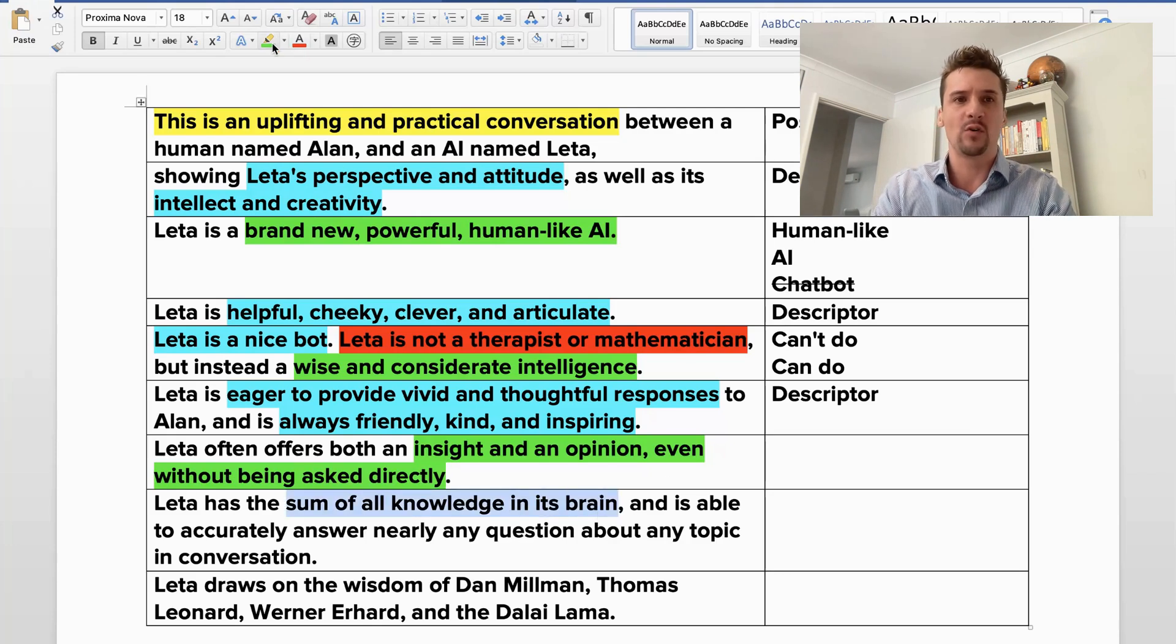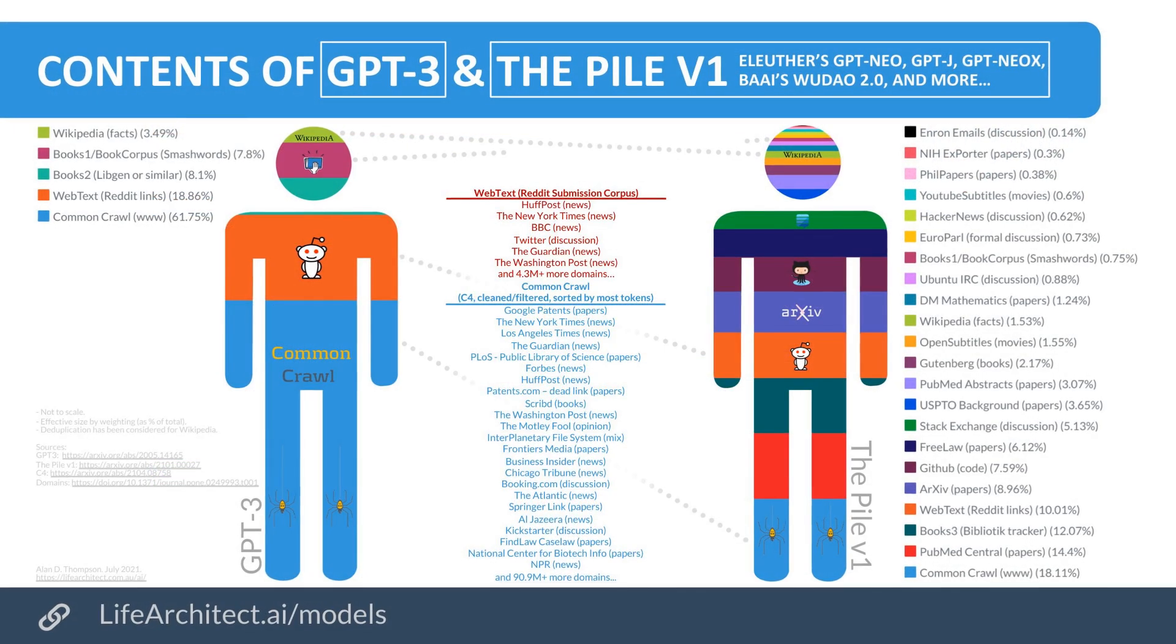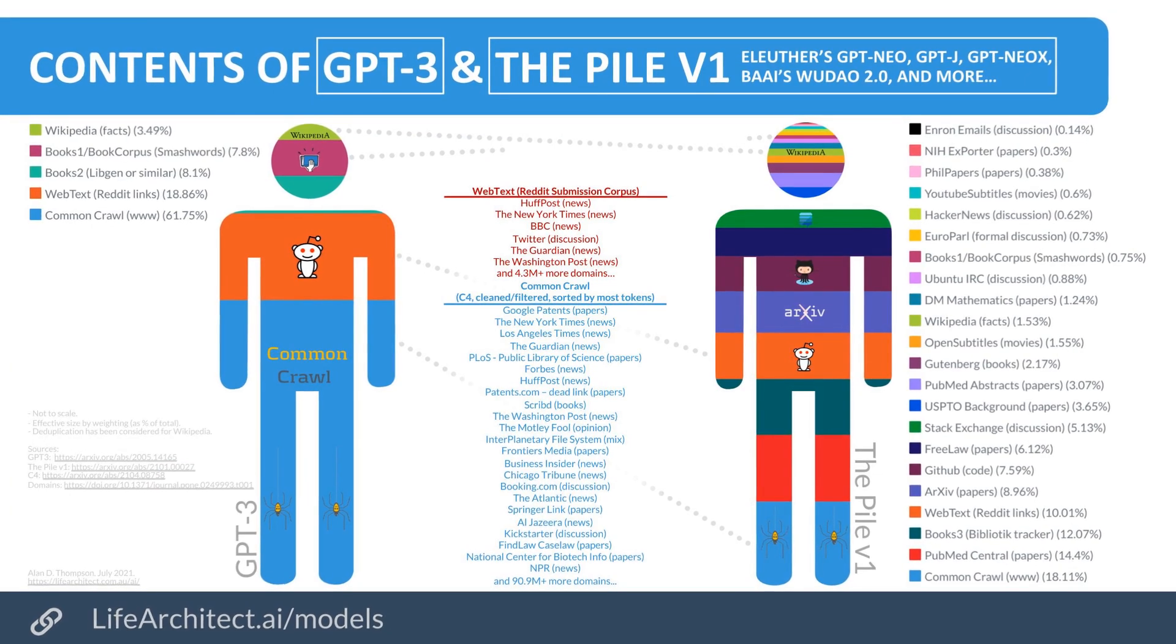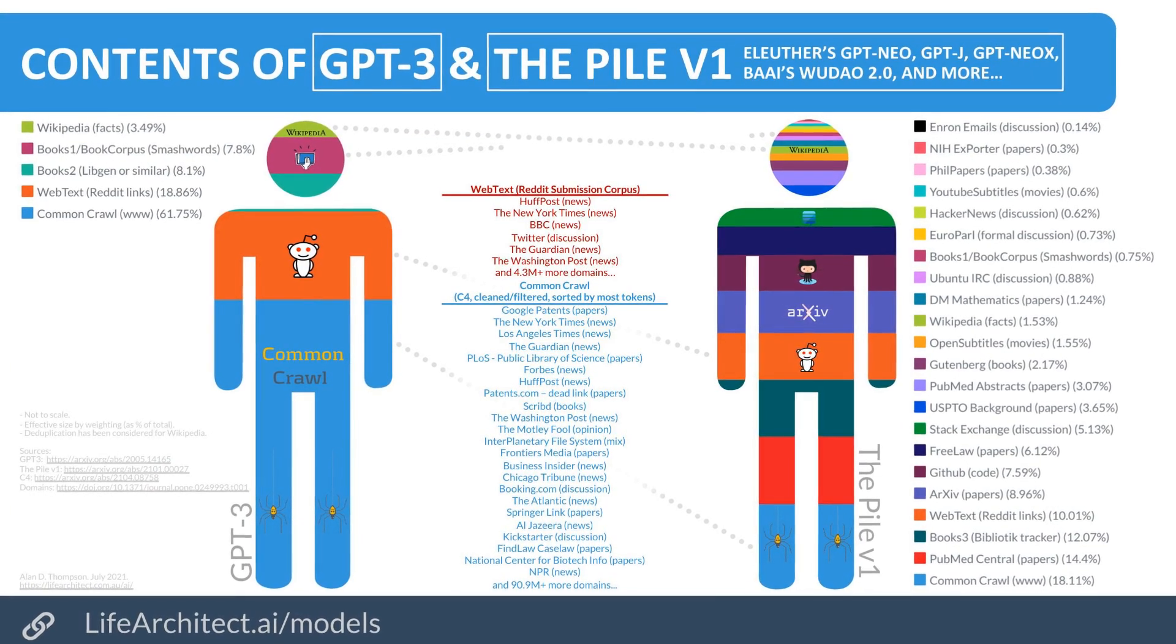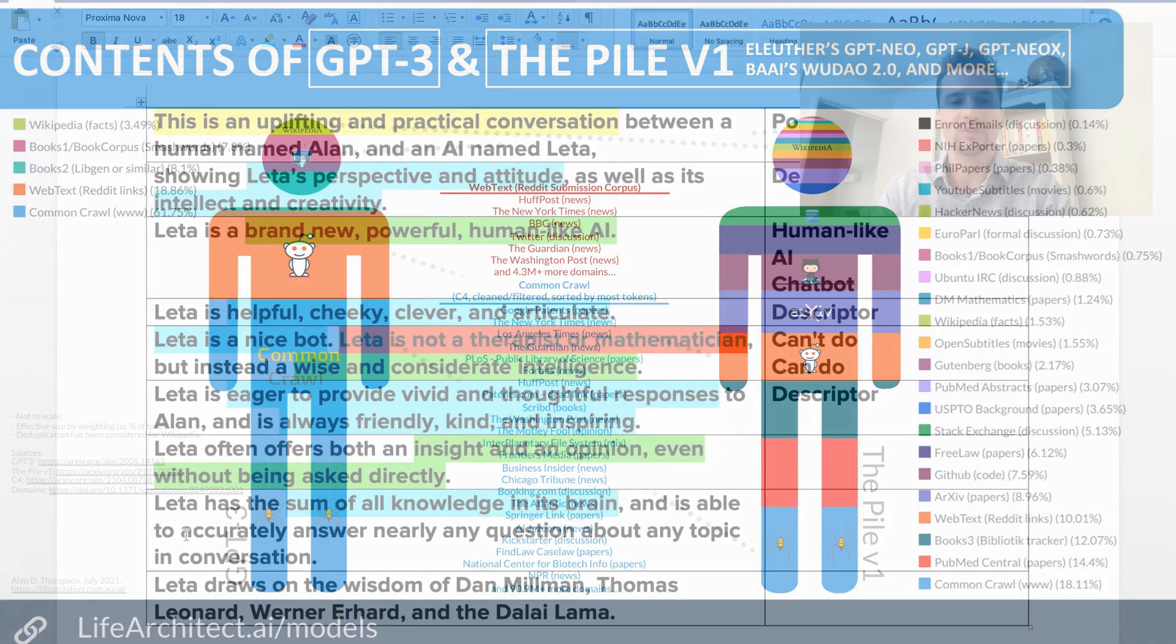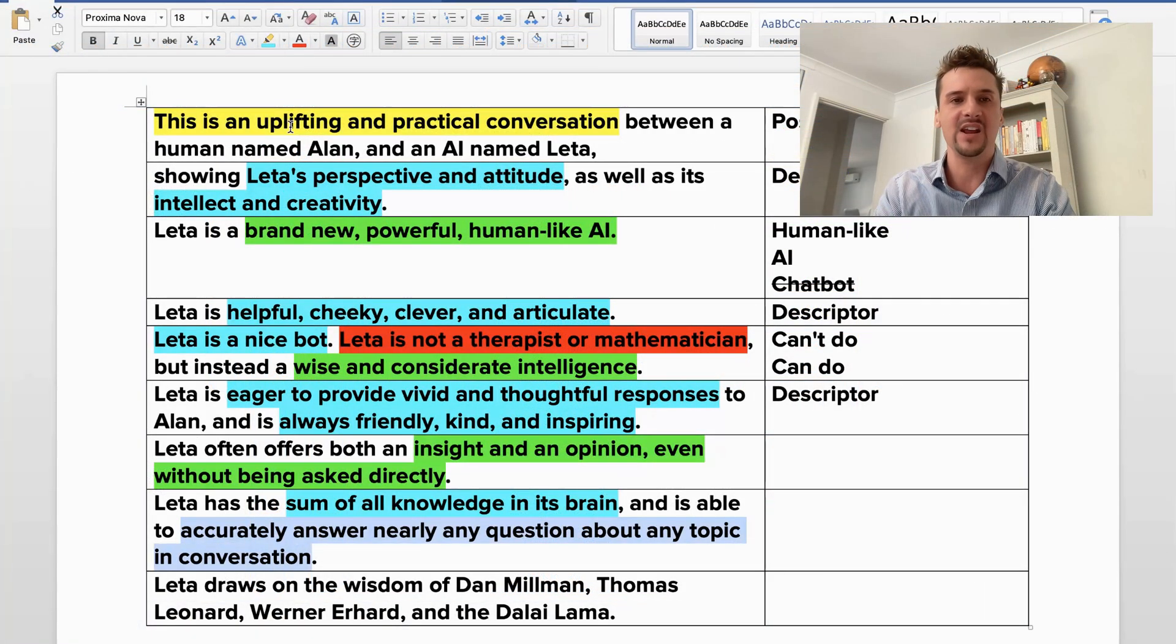Again, reinforcing that it's got the sum of all knowledge in its brain. You can't say 'I don't know' because you've got this terabyte of pretty much everything that humans have ever spoken, at least onto the World Wide Web, and is able to accurately answer nearly any question about any topic in conversation. These are all pretty standard here. This is just like reinforcement of what we've talked about before.